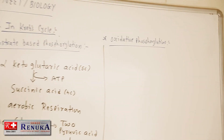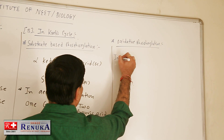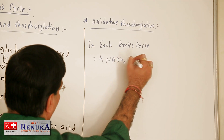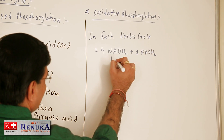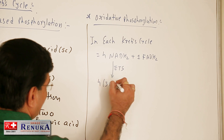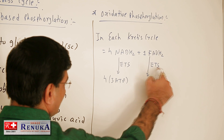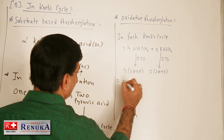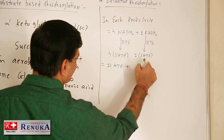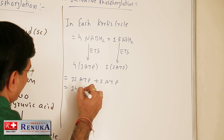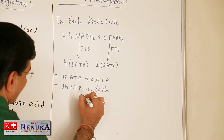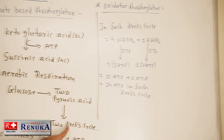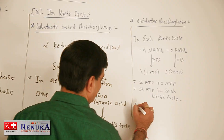By oxidative phosphorylation in each Krebs cycle, 4 NADH2 and 1 FADH2 are synthesized. Each NADH2 enters the electron transport system to form 3 ATP, and FADH2 enters the ETS to form 2 ATP. So from 4 NADH2, 12 ATP are synthesized, and from 1 FADH2, 2 ATP are synthesized — giving 14 ATP per Krebs cycle. Since the Krebs cycle occurs twice in aerobic respiration, 2 Krebs cycles produce 28 ATP by oxidative phosphorylation.